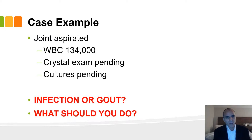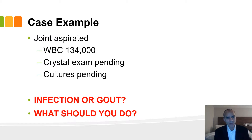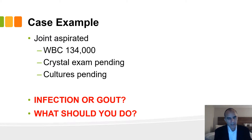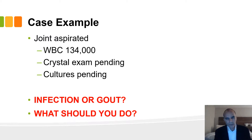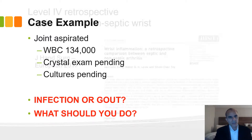His wrist was aspirated. The cell count was 134,000 — very impressive. Crystal exam is pending and cultures are waiting. So what do you do? Is it an infection? Is it gout? Is it something else? How do you approach this?